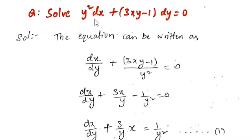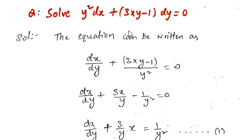When you divide the given equation with dy·y² throughout, y²/y² cancels and you get dx/dy. For the other term, dividing by y² gives the simplified expression.